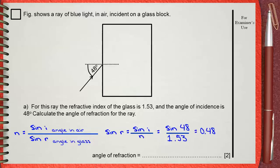The result of this is 0.48. This is sine the angle of refraction. So, to get the angle of refraction, we get the inverse sine of this number. This will give you on your calculator that the angle of refraction is 29 degrees.